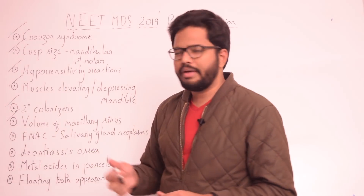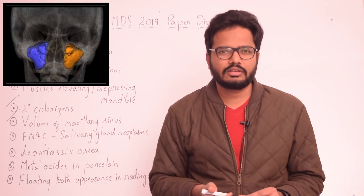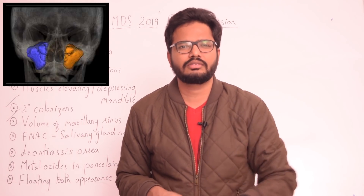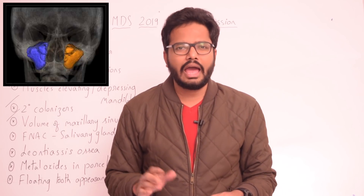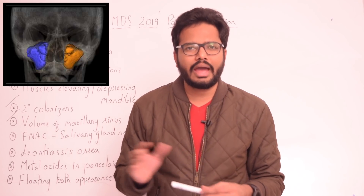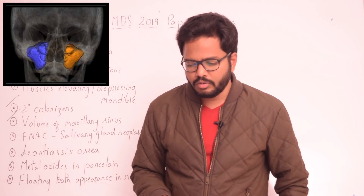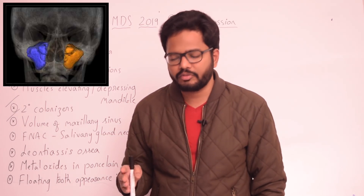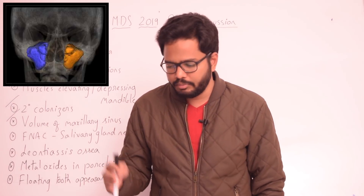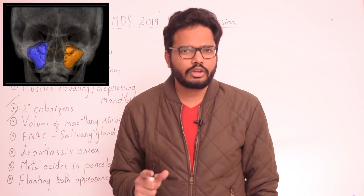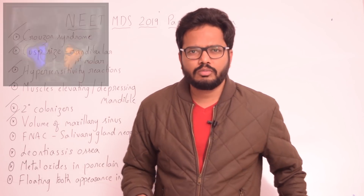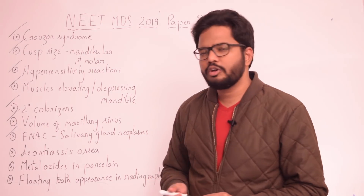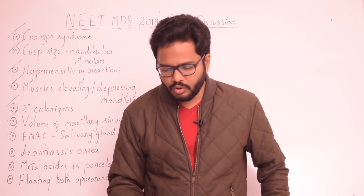The volume of the maxillary sinus is something we've discussed previously. The average volume of the maxillary sinus is about 15 ml, with a range extending between 4.5 ml and 35.2 ml.